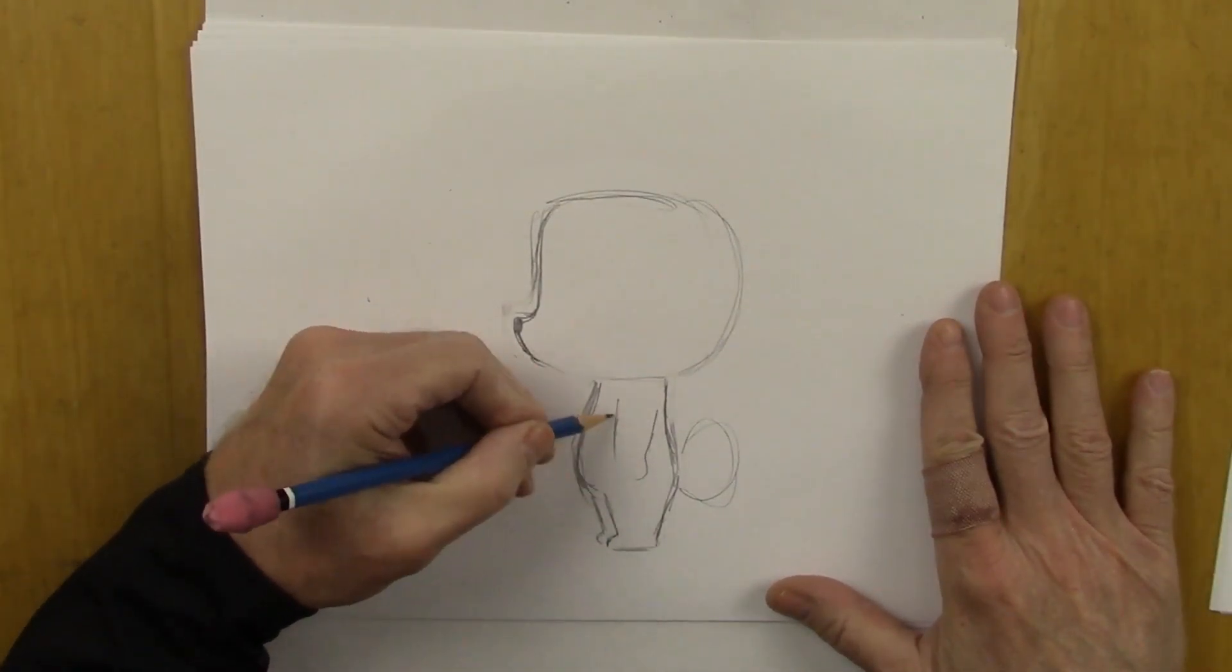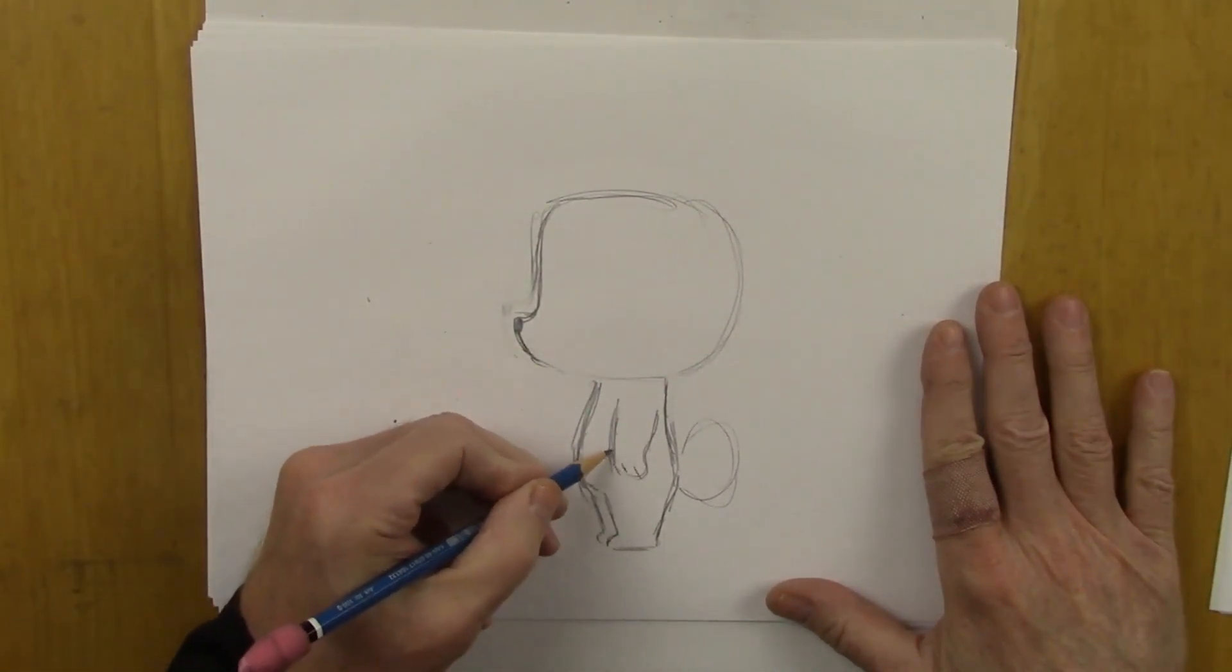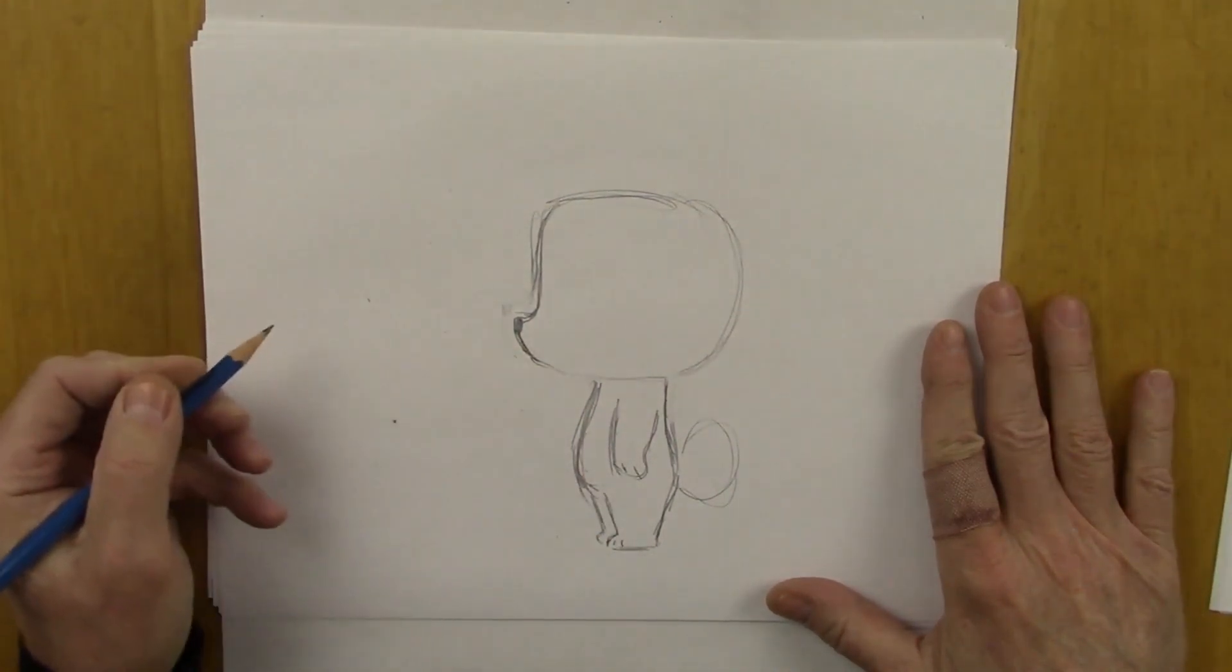And the arm comes down like this at the side. Here is the paw, like that.